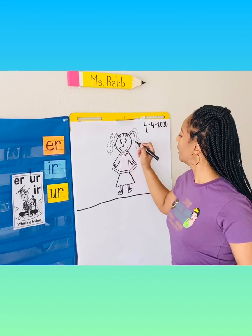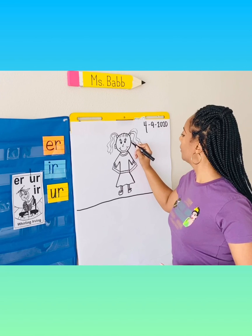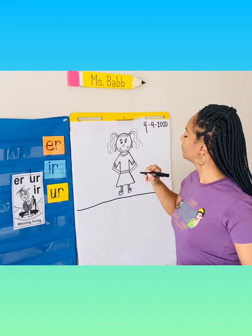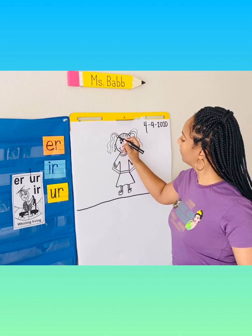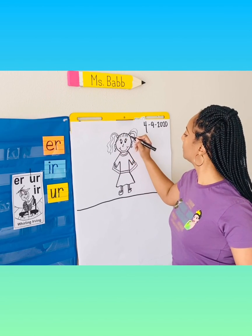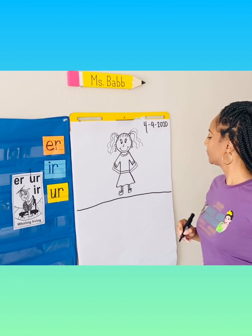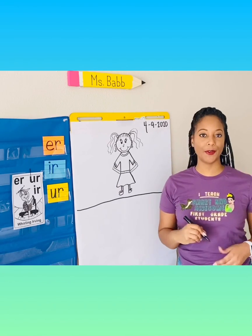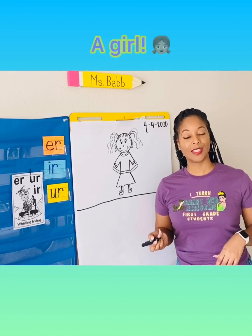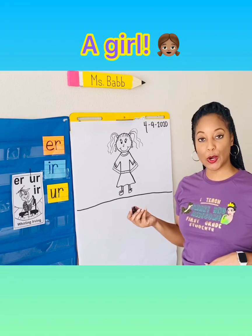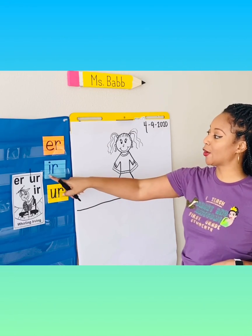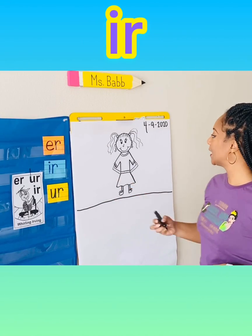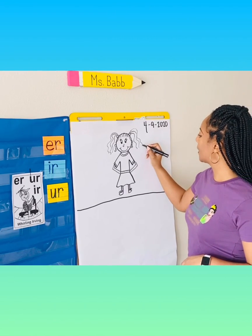Here we need an earring. Maybe she wants to wear some earrings. Boys and girls, what did we draw? That's right, we drew a girl. A girl.